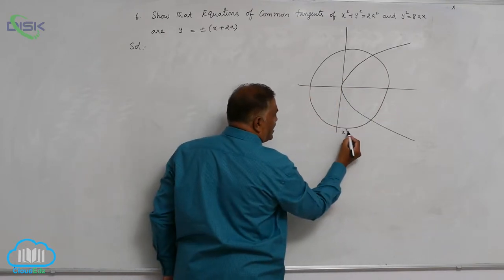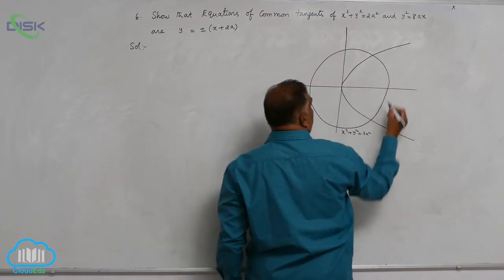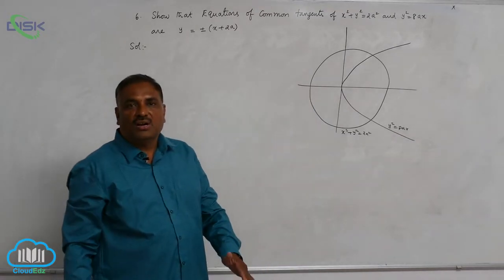Now this is circle equation x square plus y square equal to 2a square and parabola is y square equal to 8ax. Now you want to find out the common tangent.